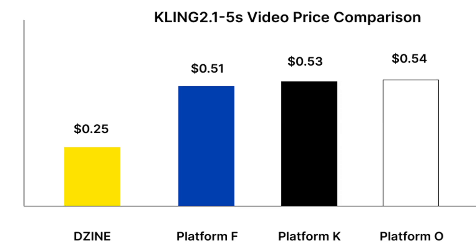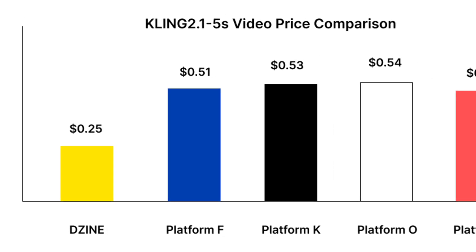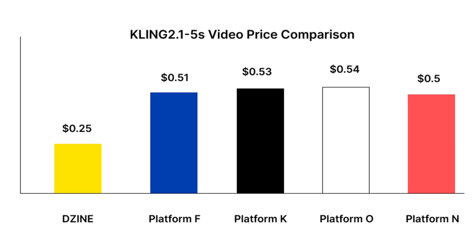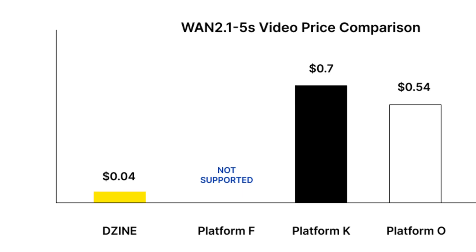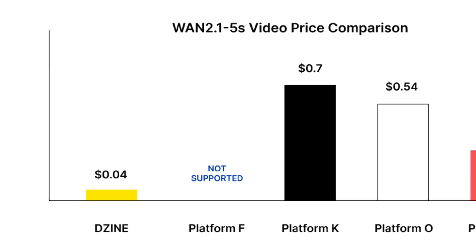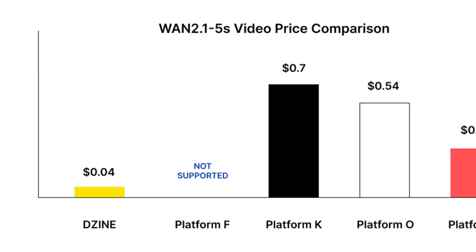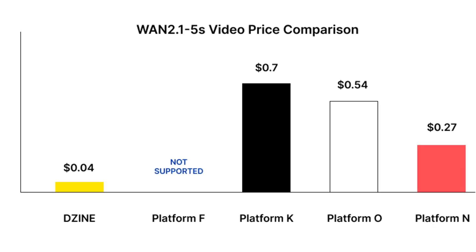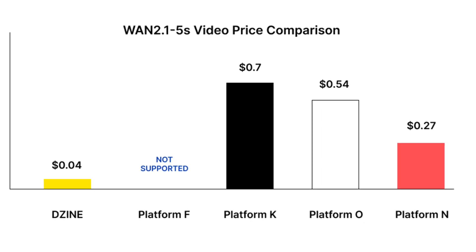You're probably wondering how Design compares to other tools on price. For Kling 2.1 at 5 seconds, Design comes in at just 25 cents per 5 seconds, whereas some other platforms come in at more than double that price. For the WAN 2.5 model at 5 seconds, it's just 0.04 cents — some platforms don't even support WAN 2.1, and one platform is even 70 cents per 5 seconds. As you can see from the charts, Design AI is much cheaper for the same video tools than many other platforms, making it the obvious choice for video creation.